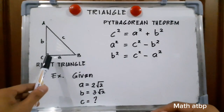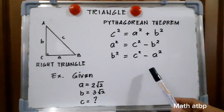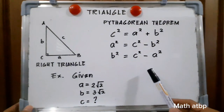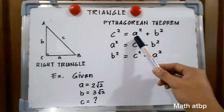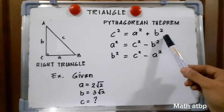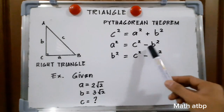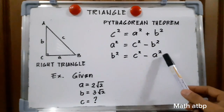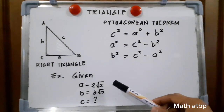In a right triangle, we'll be using the Pythagorean theorem in order to find the sides of the triangle. The Pythagorean theorem states that the square of the hypotenuse is equivalent to the square of the altitude plus the square of the base. So, a squared is equal to c squared minus b squared, and b squared is equal to c squared minus a squared, where a, b, and c are the sides of the triangle.